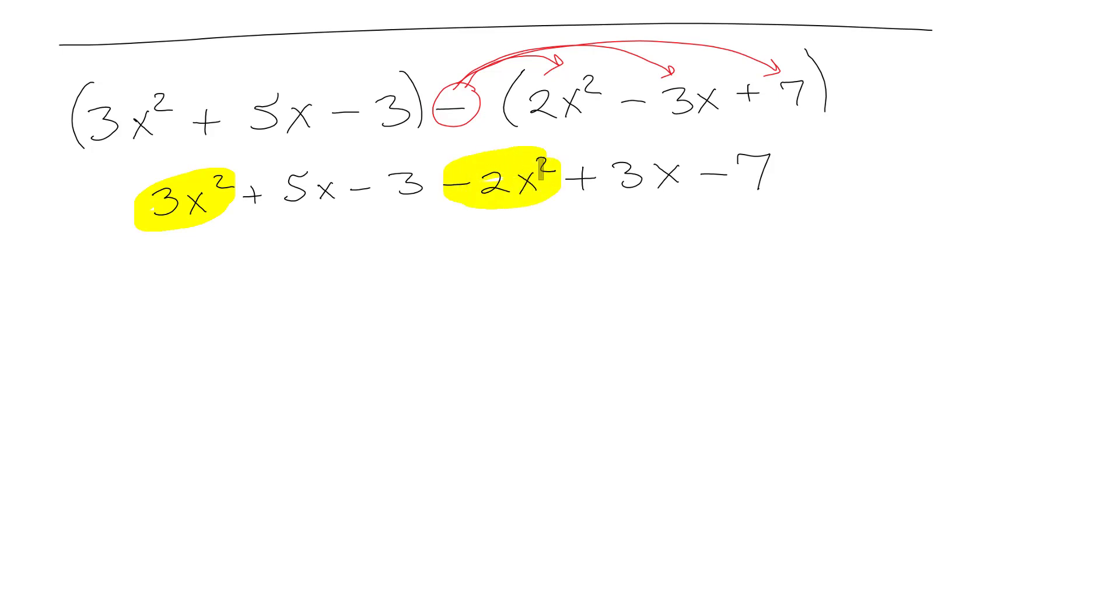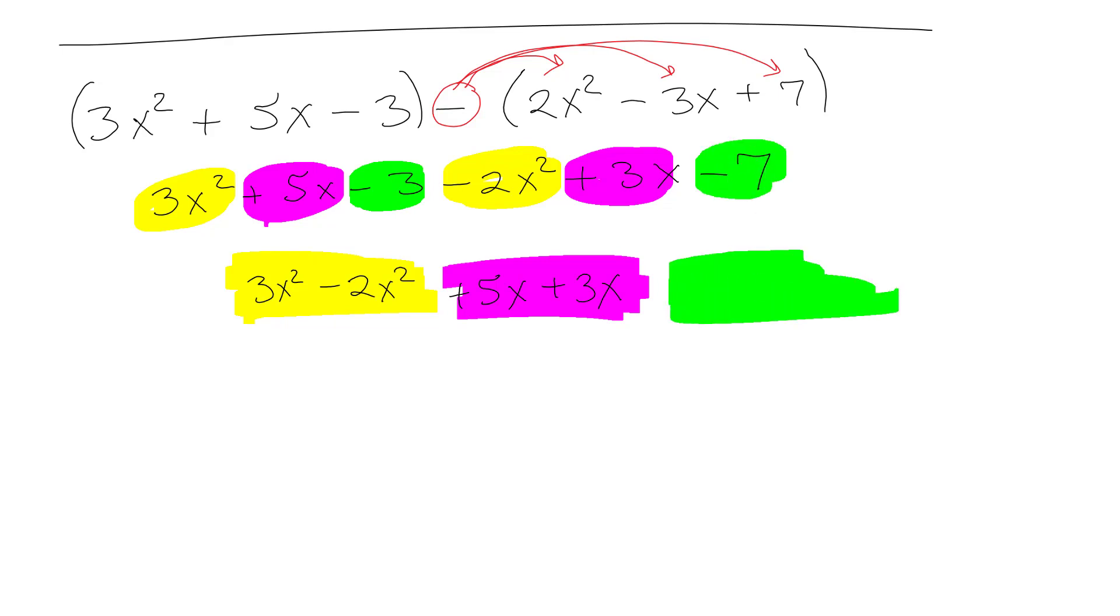So we got these that are combined. 3x squared minus 2x squared. We have these that are combined, 5x squared plus 3x. And we have these that are combined, minus 3 minus 7. So we've got 3x squared minus 2x squared is just 1x squared, or you can just eventually take the 1 away. You don't need the 1 because it's implied. 8x minus 10.